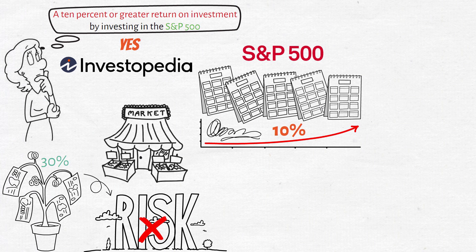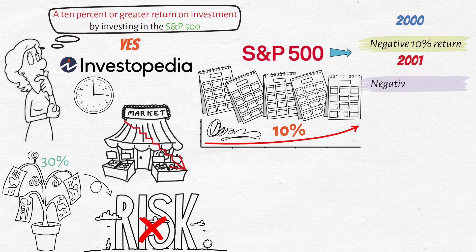However, there have been times when the market has returned a negative return. In the year 2000, the S&P 500 returned a negative 10% return, followed by a negative 13% return in 2001 and a negative 23% return in 2002.